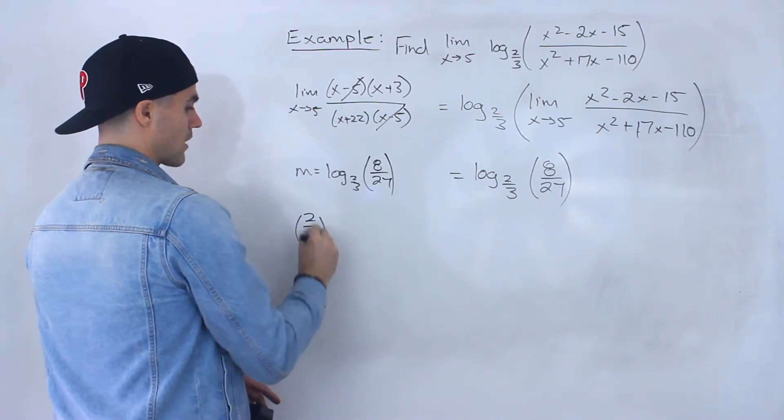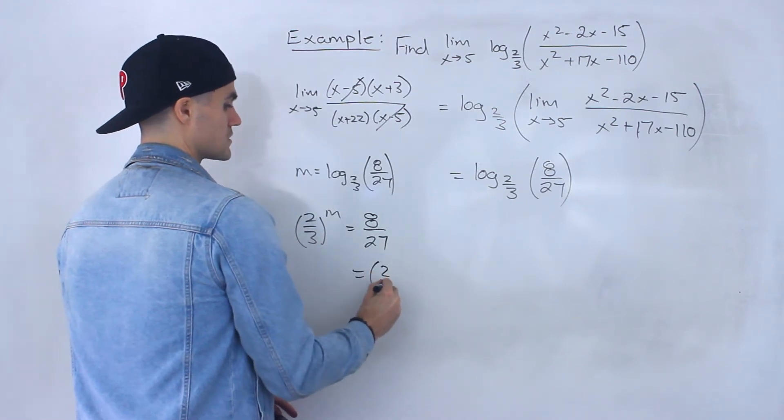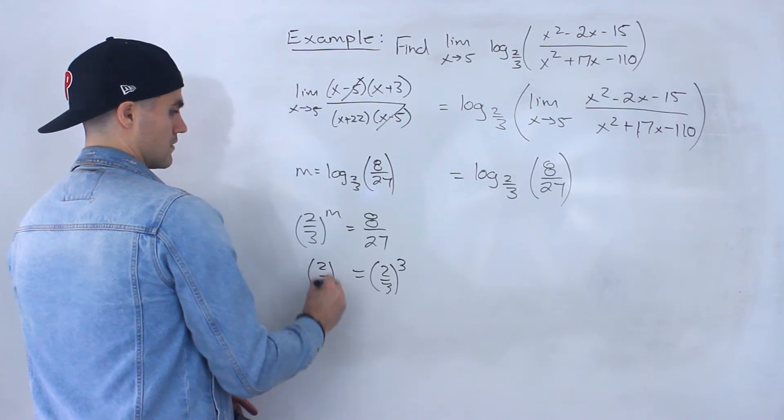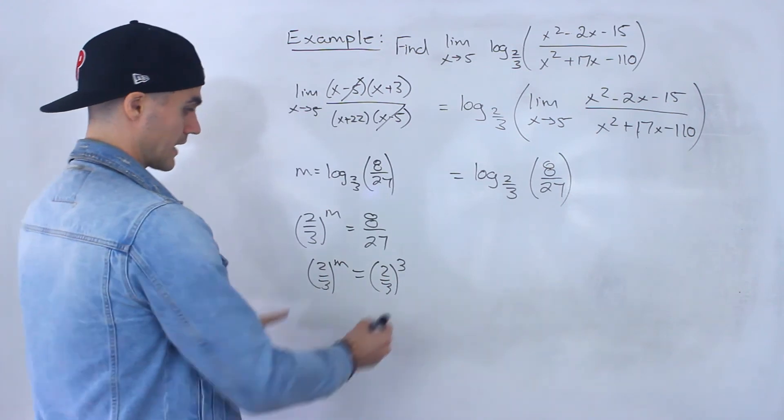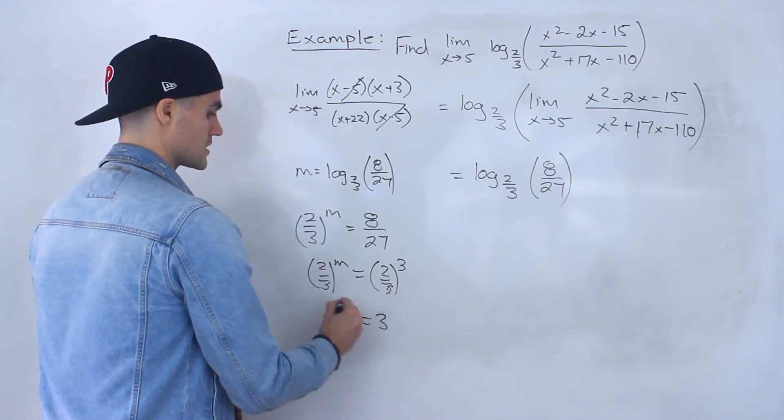So 2 over 3 to the power of m equals 8 over 27, change this 8 over 27 to 2 over 3 to the power of 3, right? 2 to the power of 3 is 8, 3 to the power of 3 is 27. And now the same basis, they got the same basis. We could drop the basis and it's just equal to 3.